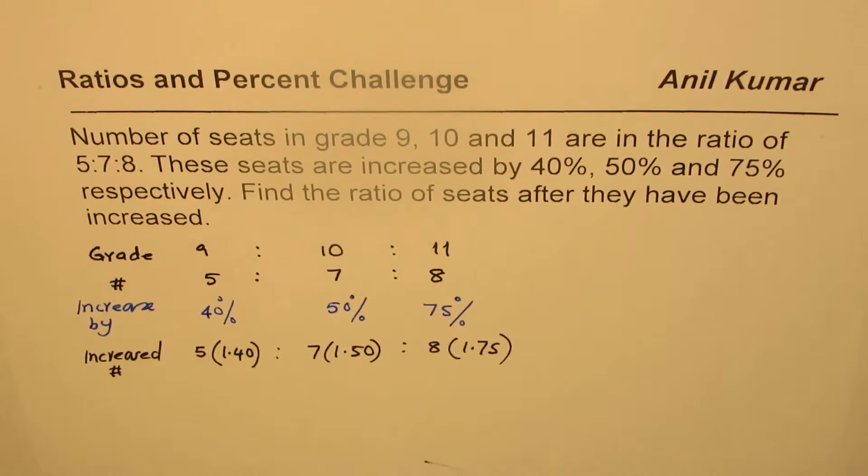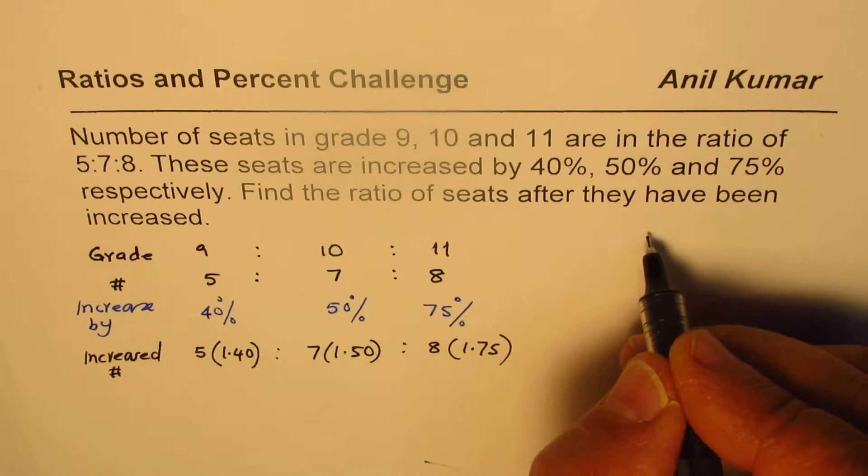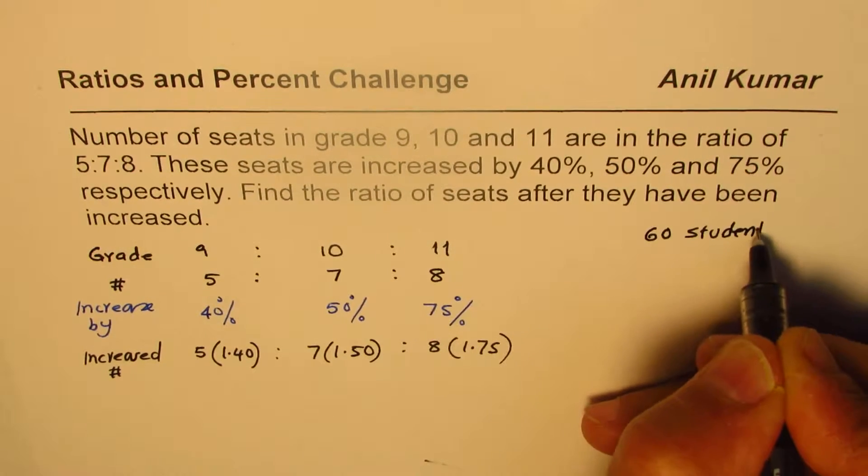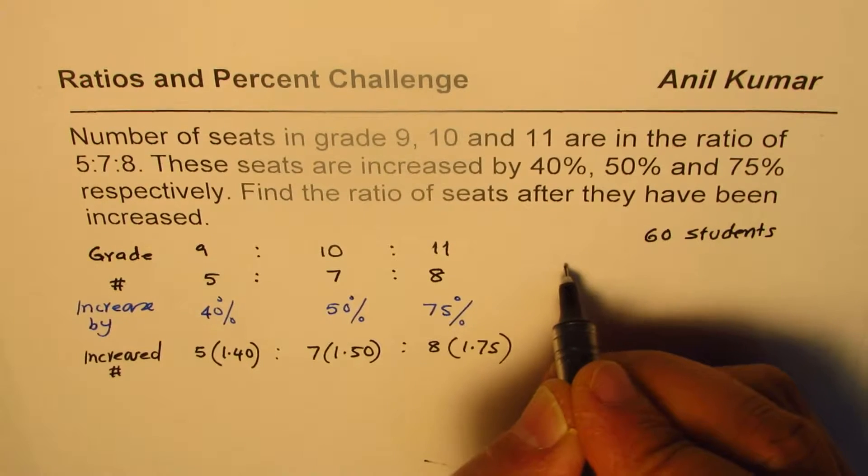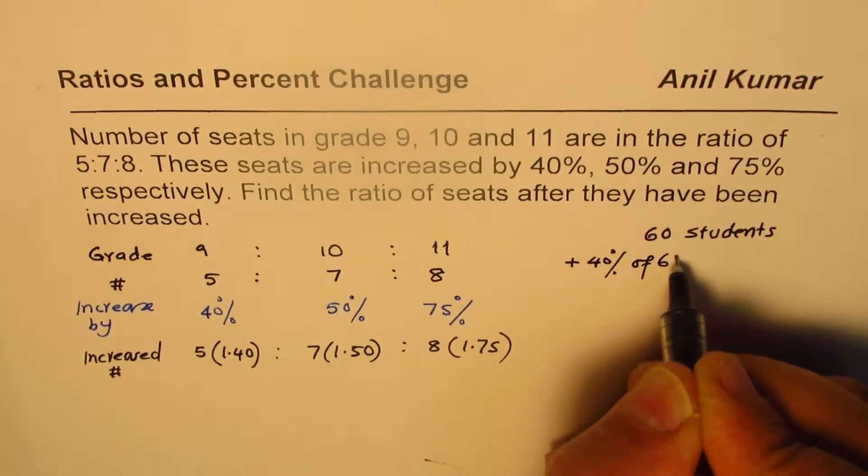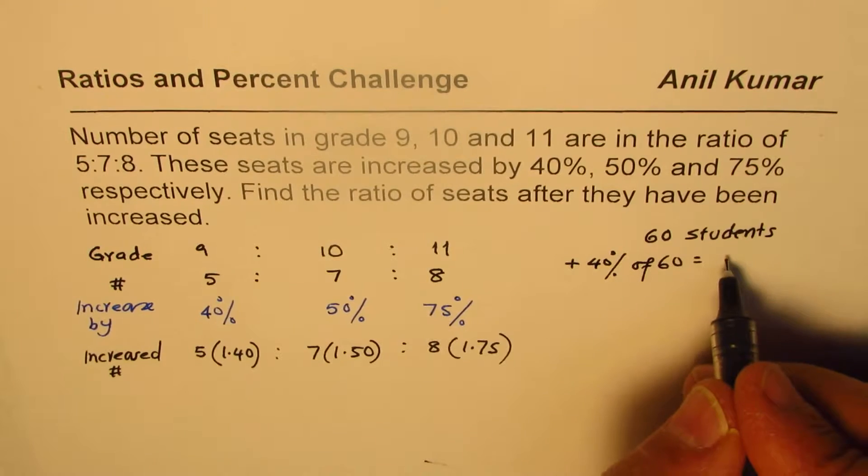So let me give you an example. Let us say we have 60 students. I am just taking an example. And if I do increase by 40%, so 40% of 60 is what? So that means you have to multiply by 0.4. 4 times 6 is 24.